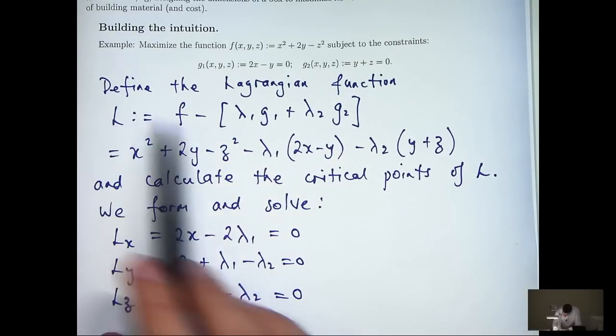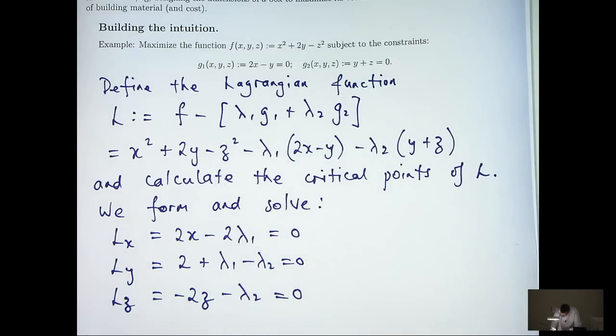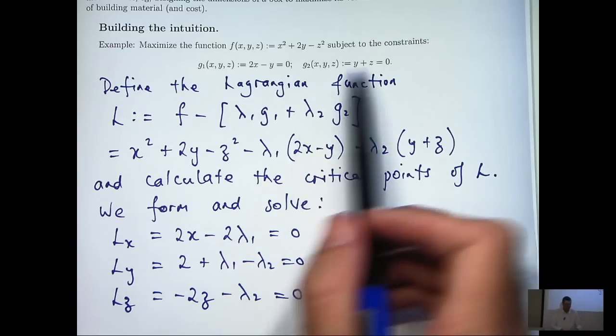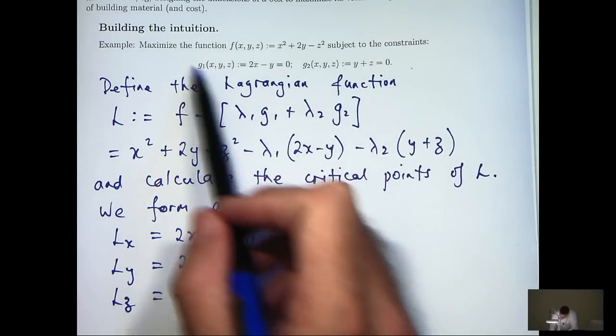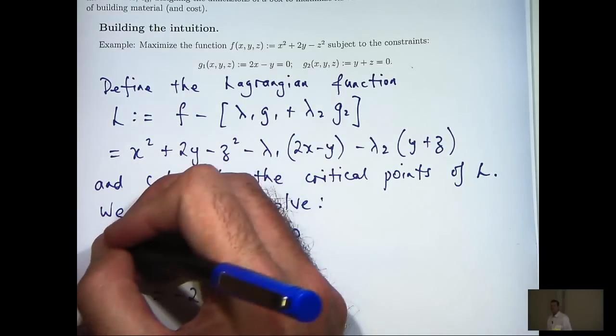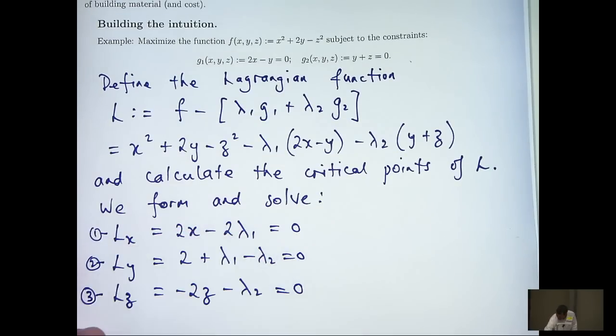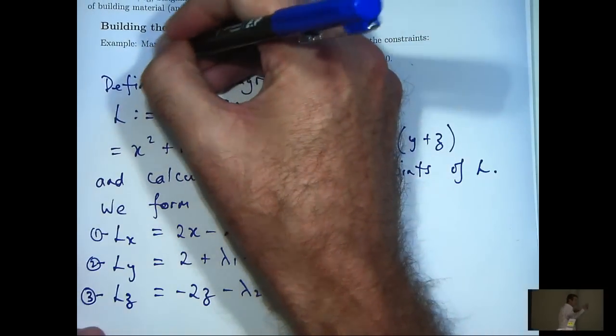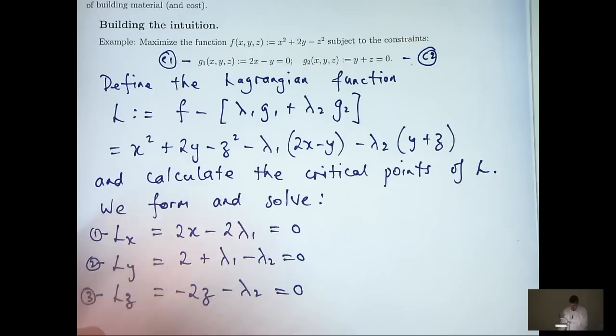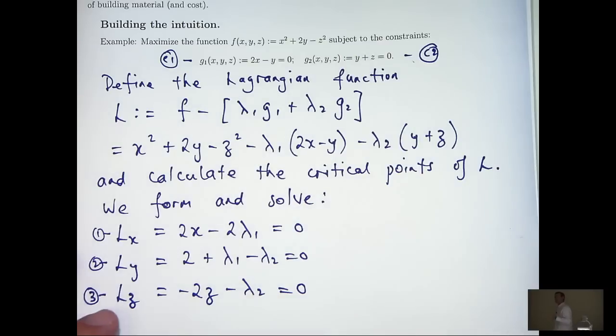Now, you may be thinking, well, hang on, L also depends on lambda 1 and lambda 2. What about the partial derivatives with respect to lambda 1 and lambda 2? Well, actually, if we calculate those partial derivatives and set them equal to 0, they're actually the constraint equations. So I don't really need to do those calculations. I'm going to number these equations because I'll refer back to them. And I'm going to number these as c1 and c2, constraint 1 and constraint 2. So what I would like to do is solve the five equations for x, y, z, lambda 1 and lambda 2.